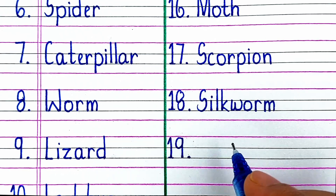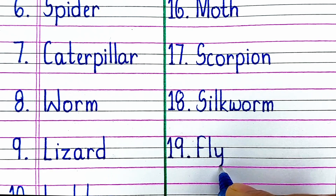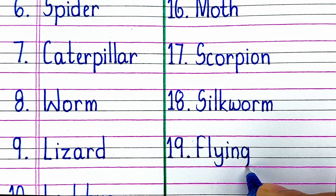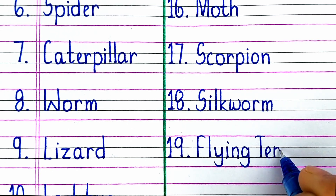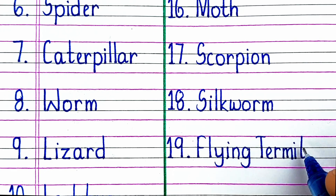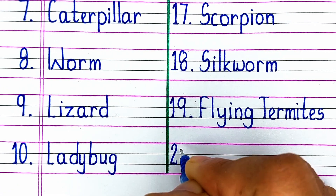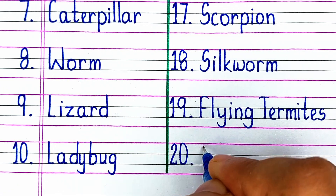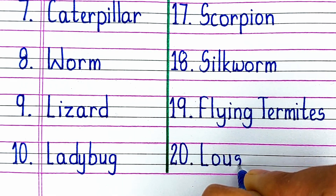On number 19 we have F-L-Y-I-N-G T-E-R-M-I-T-E-S, Flying Termites. Last one, L-O-U-S-E, Louse.